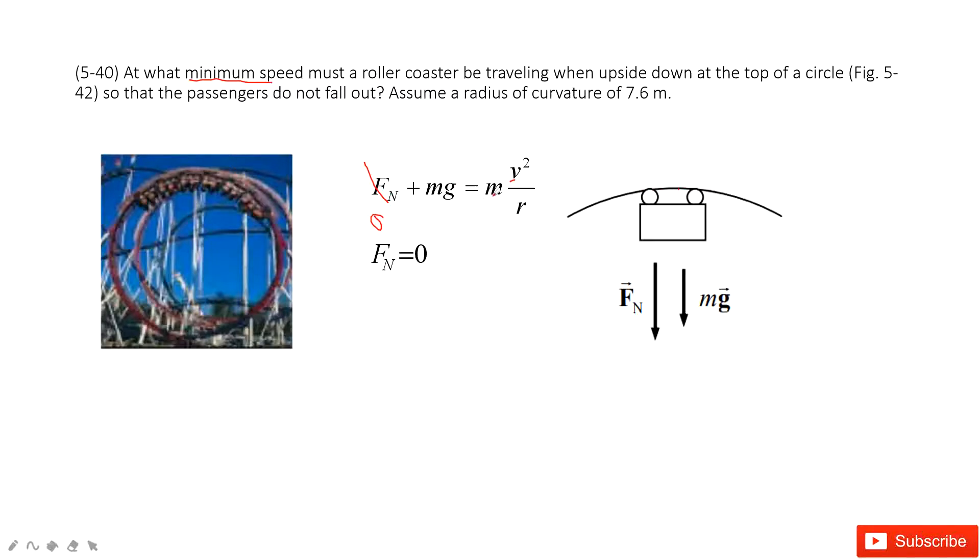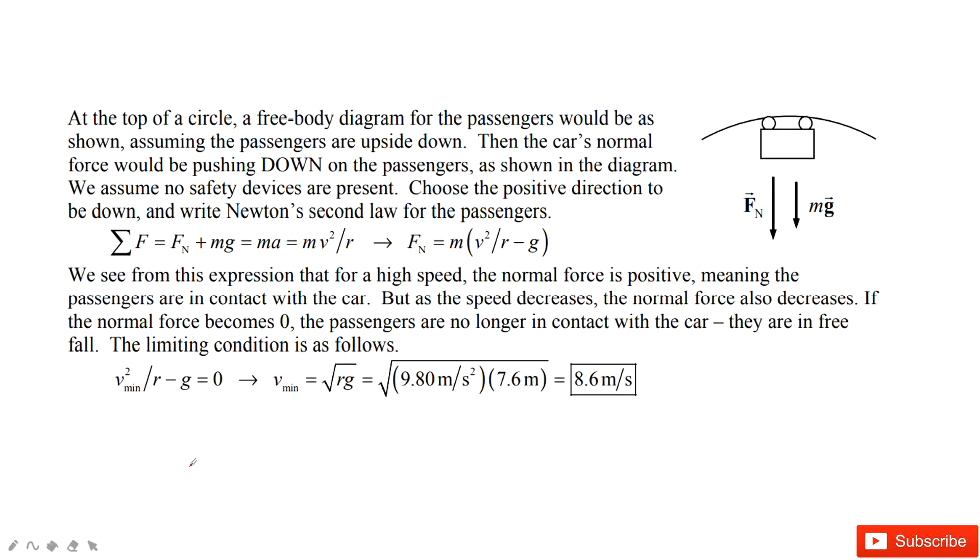So mg equals mv squared divided by r and then we find v equals square root of g times r. This r is given and g is 9.8 meters per second squared. Therefore, the minimum speed is 8.6 meters per second.